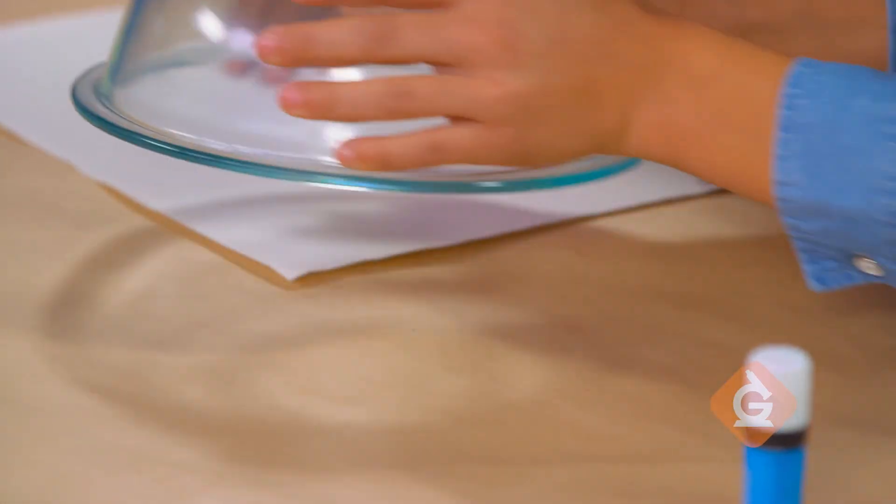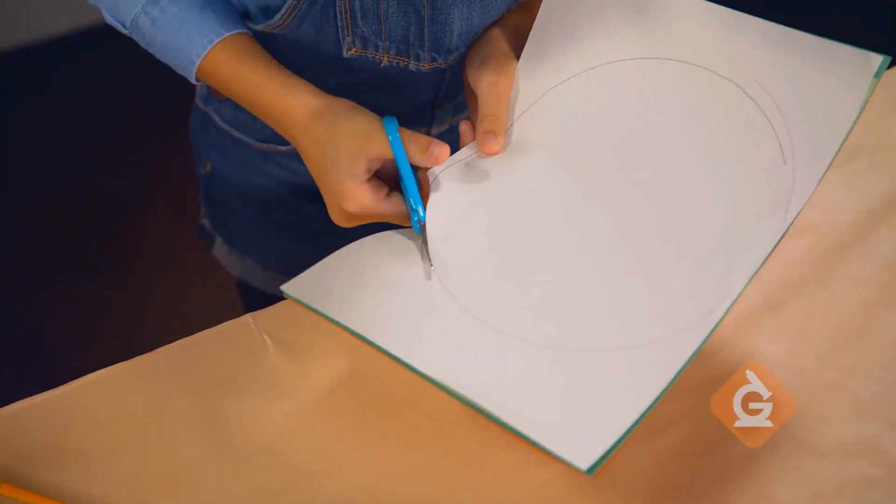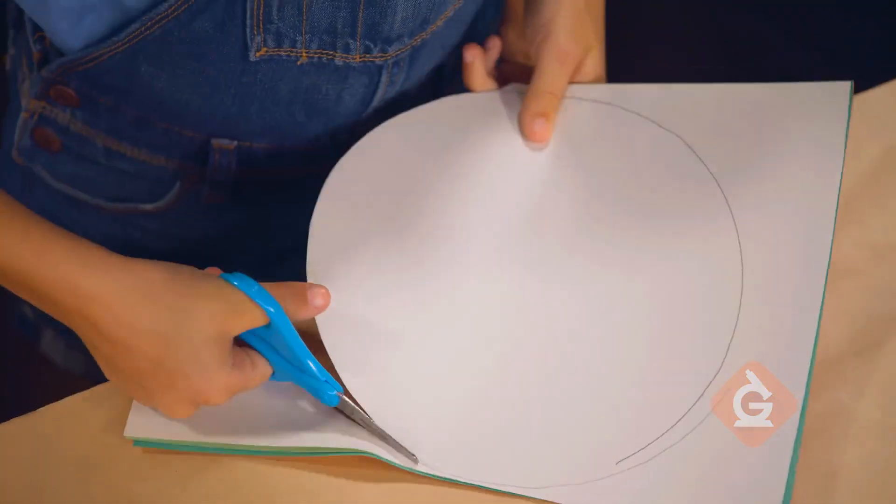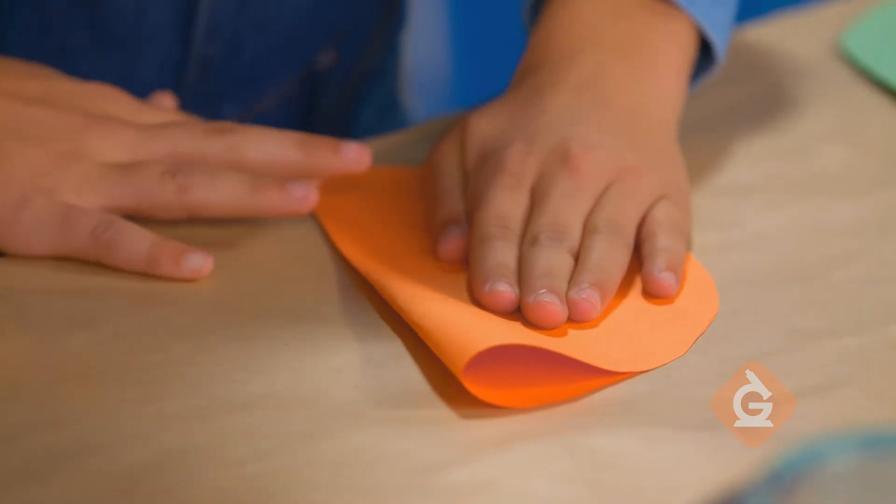First, use a bowl to draw a circle on the paper. Then, cut out a big circle from all the pages of construction paper. Next, fold each paper in half.